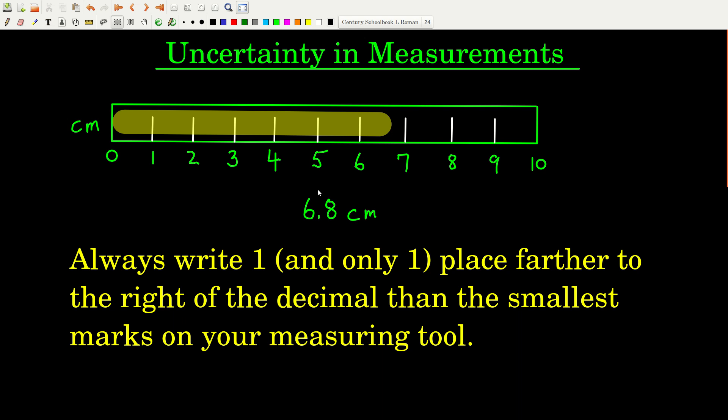When you're writing down a measurement that you took with an instrument, you always put one more place to the right of the decimal than the closest marks are to each other. Remember, that's a really important rule. You're going to use this in the lab so much.